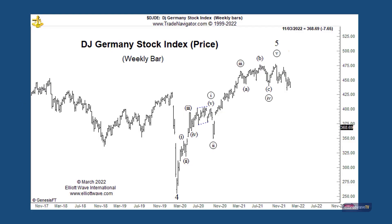This chart shows the Dow Jones Germany stock index, which is price-based. The European short-term update started showing this chart last year when we included a wave count suggesting that our five-wave advance was complete. We also noticed that old resistance had started to act as support, and we noted this zone as being a crucial pivot point.